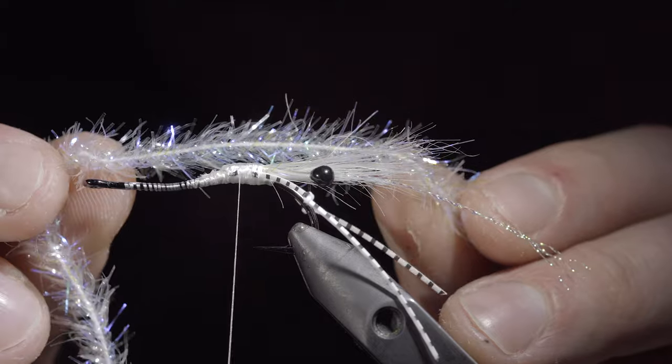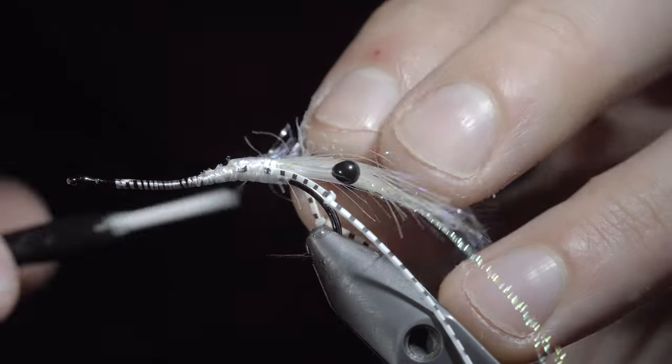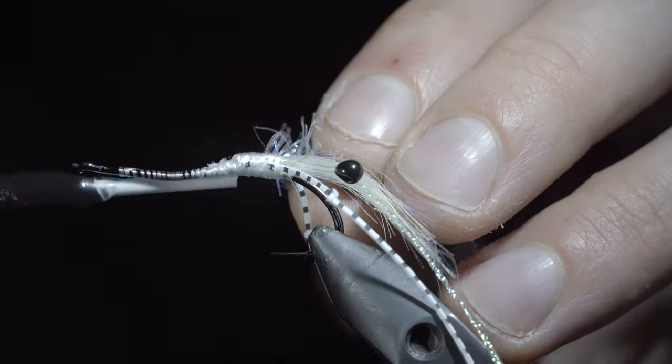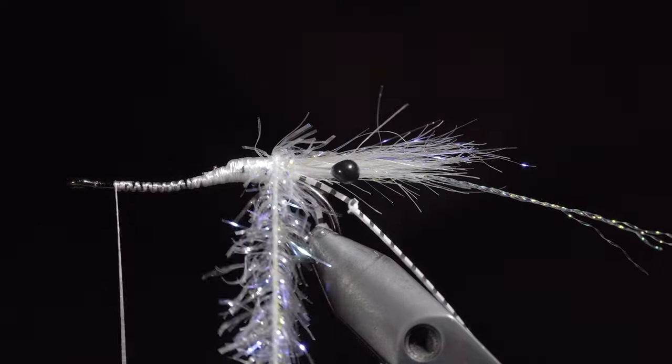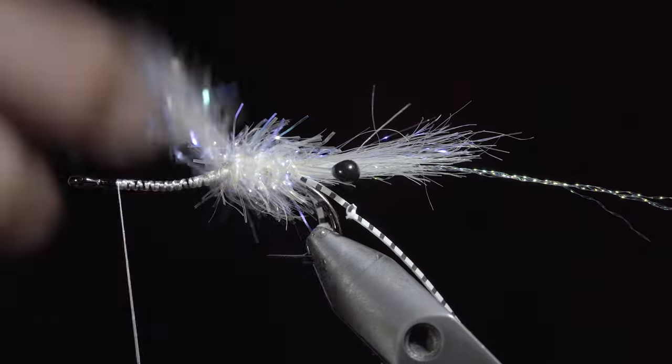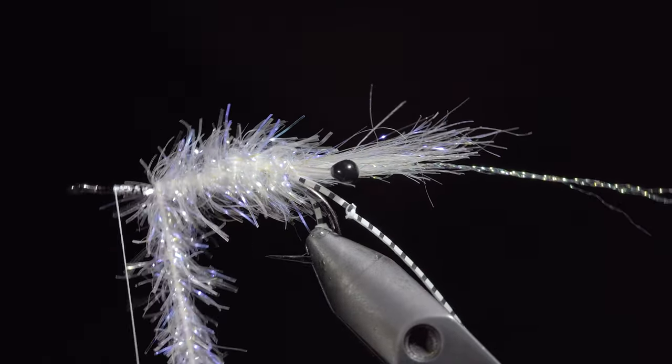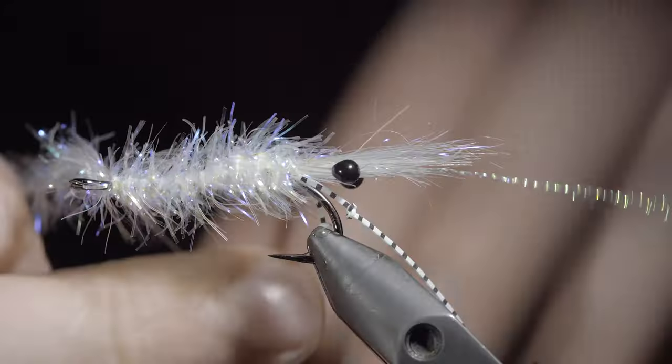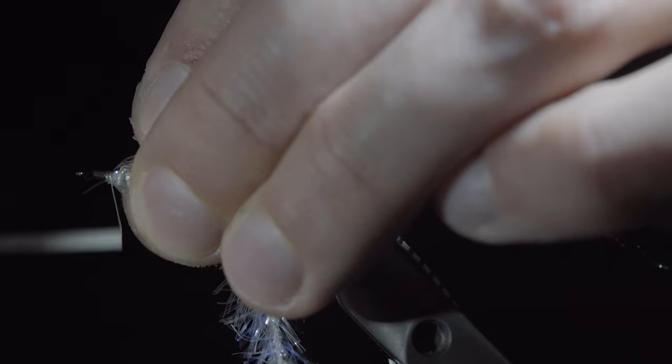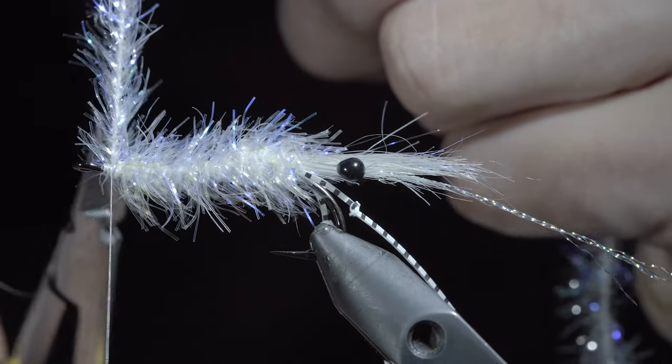We will then grab some UV Estaz in white, secure this to the back of the fly, bringing our thread forward. Begin wrapping the Estaz up the body in closed spirals. Secure, taking thread wraps both in front as well as behind and snipping the excess free.